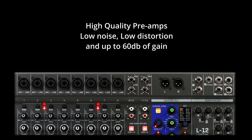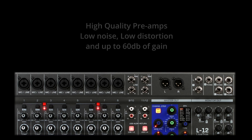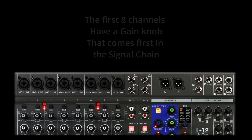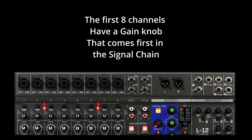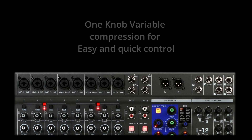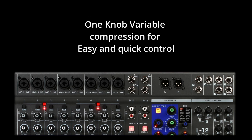All inputs have high-quality preamps featuring low noise, low distortion, and up to 60 dB of gain — great clarity and transparency. The first eight channels have a gain knob that comes first in the signal chain with a wide range of up to 60 dB, perfect for setting proper gain. There's also a one-knob compression on the first eight channels for quick and easy control.